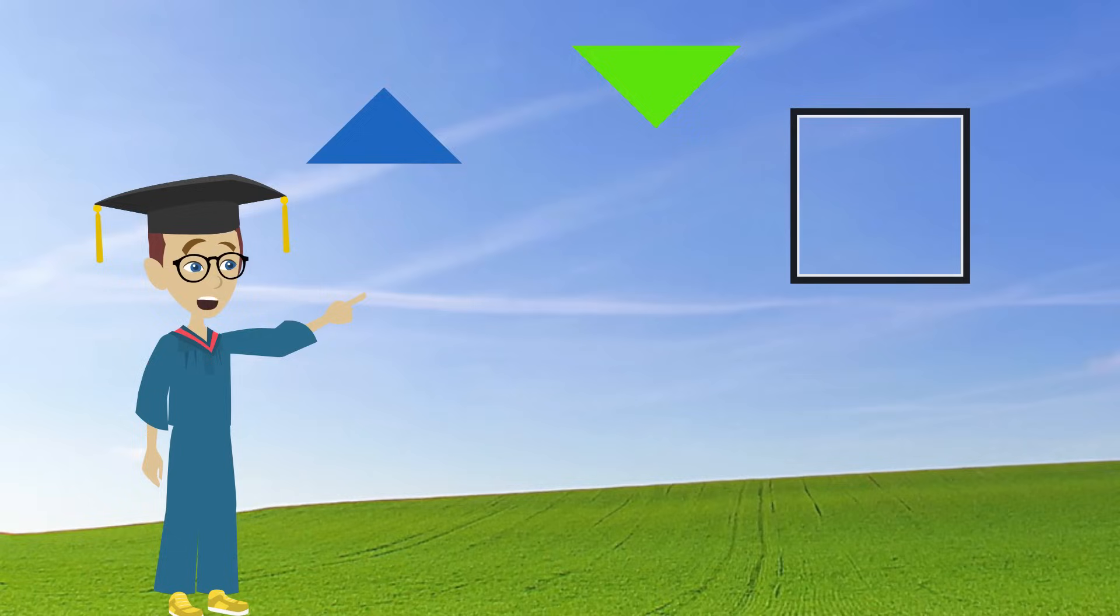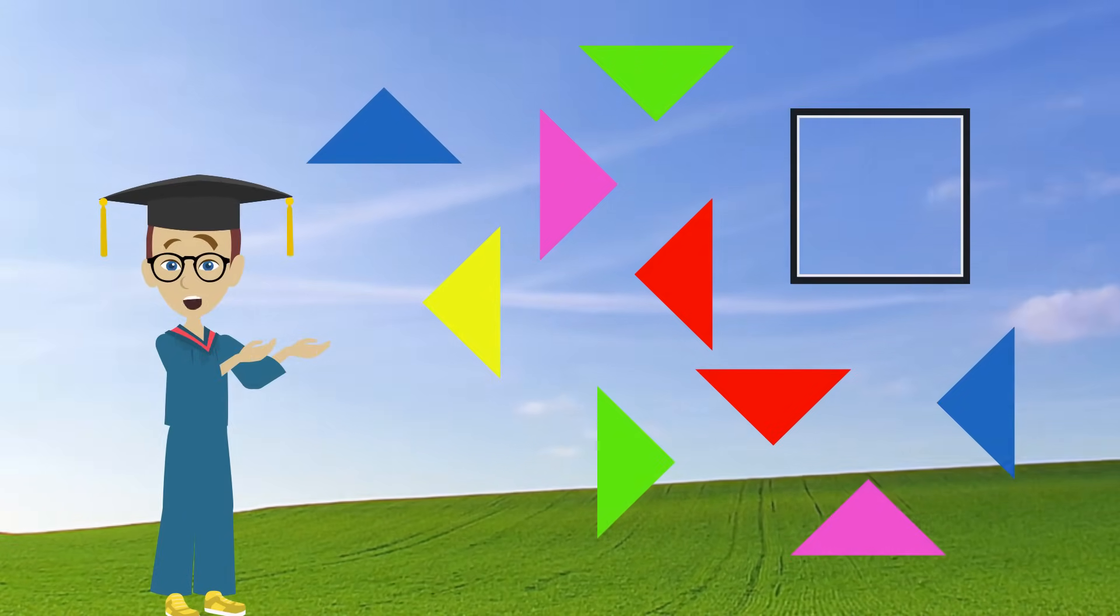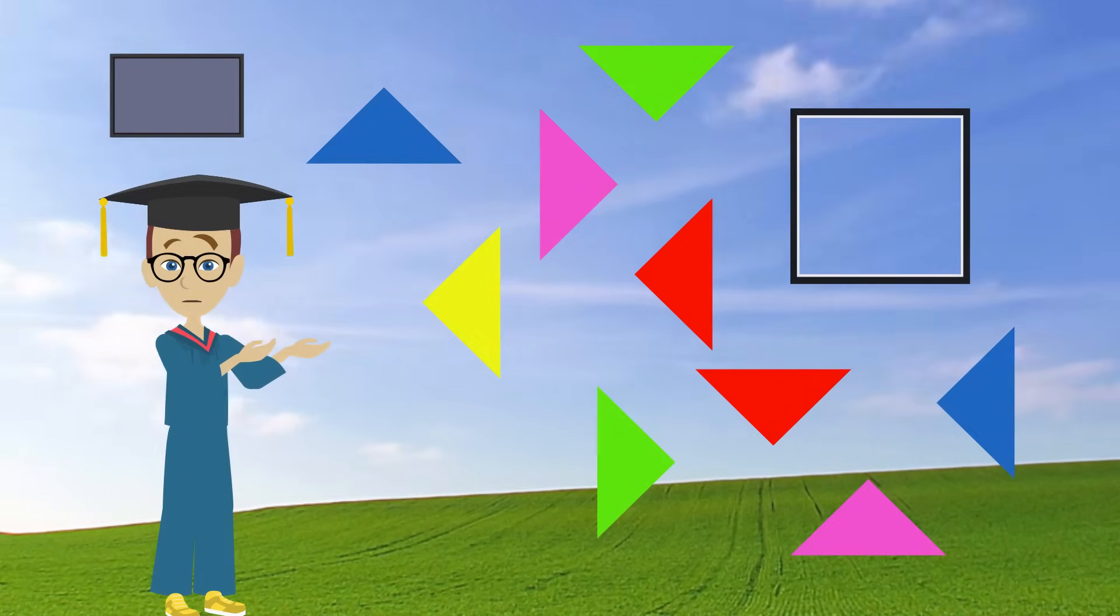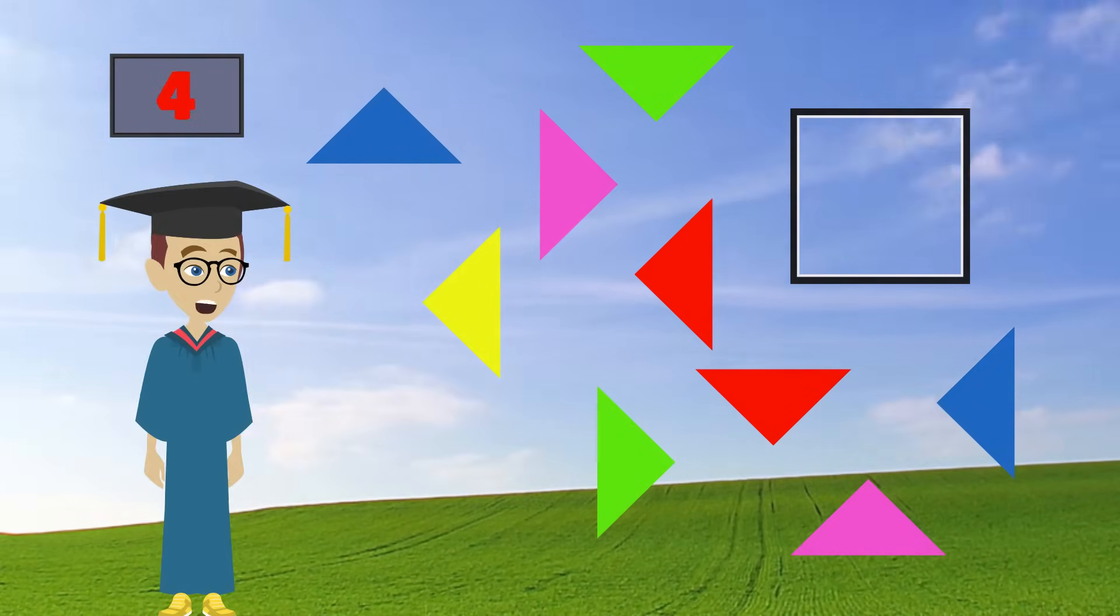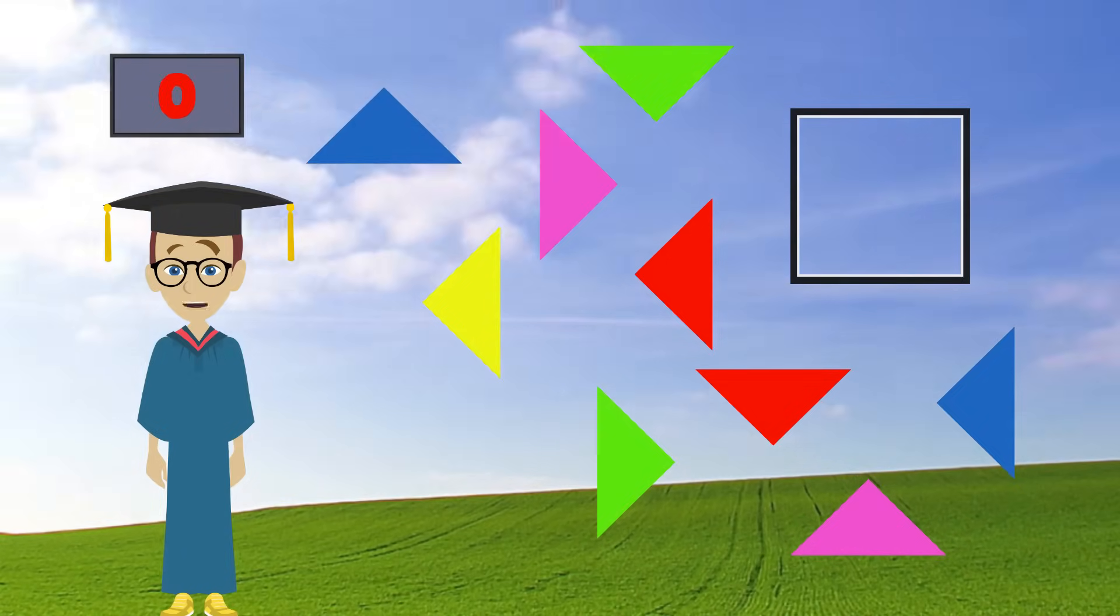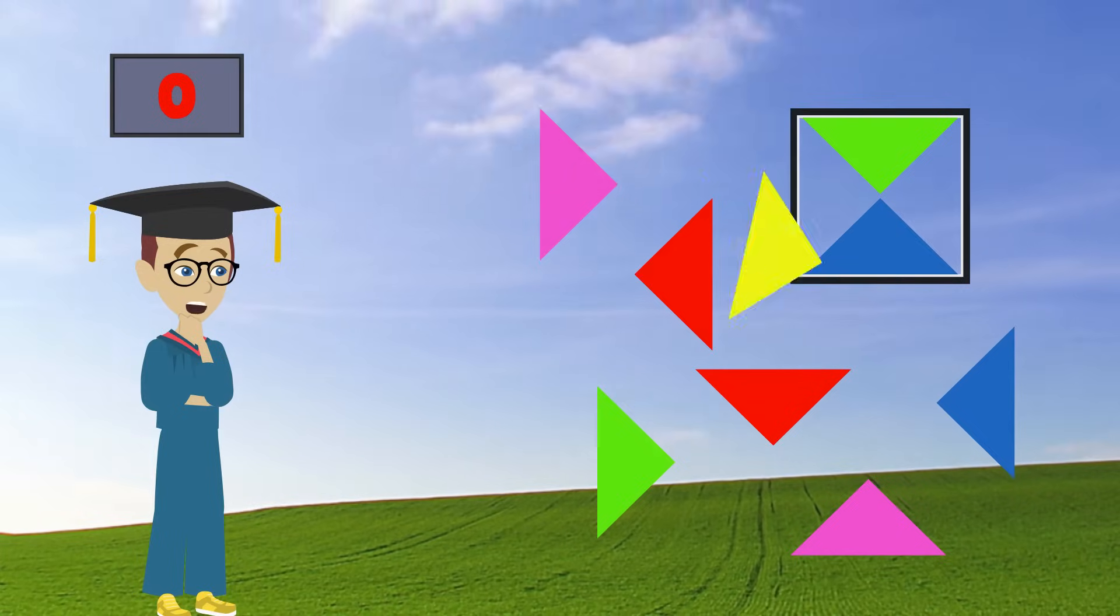Look, it's a square and a bunch of triangles. We have to figure out how many triangles we can fit into the square. Okay, the clock starts now. I think I got the answer. A green one here and a blue one here and a yellow one here and the purple one here.